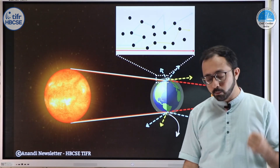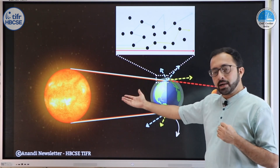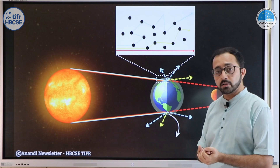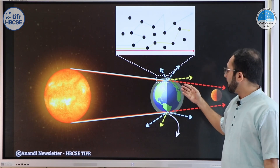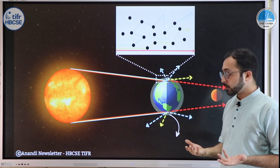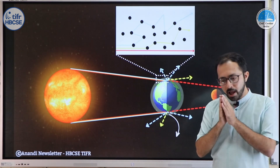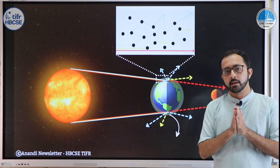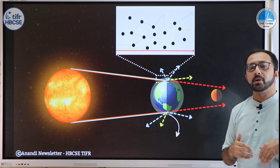But why does the moon appear red instead of completely dark? When white sunlight — composed of various colors — passes through earth's atmosphere, the blue light gets scattered the most and the red light gets scattered the least. This scattering is a wavelength-dependent phenomenon. Because of this, the red light passes through the atmosphere largely unscattered and reaches the moon, causing the moon to appear red. This scattering is called Rayleigh scattering, and we will have a separate video on it later.